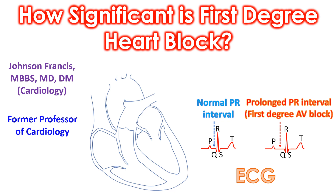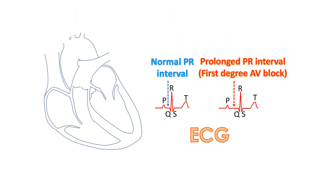The waves on an ECG are P, QRS complex, and T wave. The normal interval between the onset of the P wave and the onset of the QRS complex is up to one-fifth of a second. When this interval is increased, it is called first degree heart block, or first degree atrioventricular block to be specific.